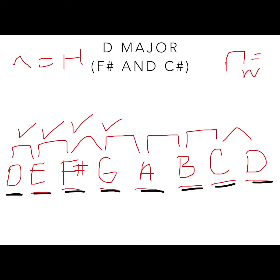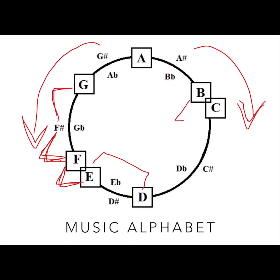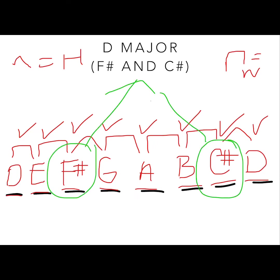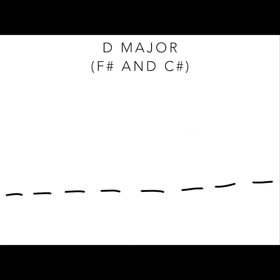We need a whole step between G and A — G and A are already a whole step. A and B are already a whole step as well, so we leave them alone. B and C need to be a whole step, but B and C natural are a half step, so we go up to C sharp — now we have our whole step. Finally, we need a half step between C sharp and D, and indeed C sharp and D are a half step. That is how D major has two sharps: F sharp and C sharp. That is how key signatures are made, because they follow the major scale formula.